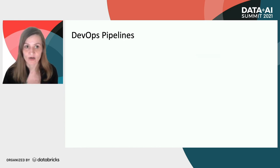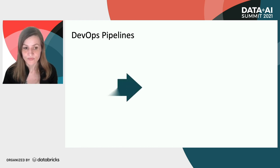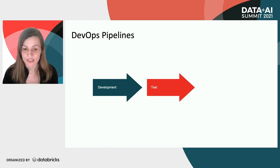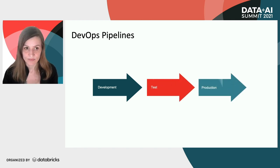To do that, we have DevOps pipelines. We have the development stage, then testing, and then production.